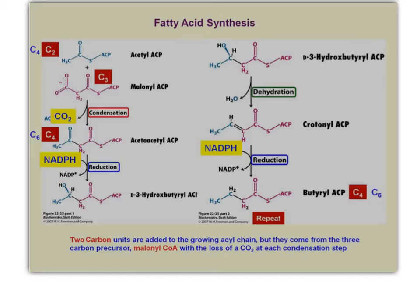Looking at the actual production of palmitate: the acetyl group is transferred from acetyl-CoA to the acyl carrier protein, and then a malonyl group attached to a carrier protein condenses with it, giving up a CO2. Here we have two carbons and three carbons — one of those carbons is lost as CO2 in condensation — giving a four-carbon acetoacetyl-ACP.